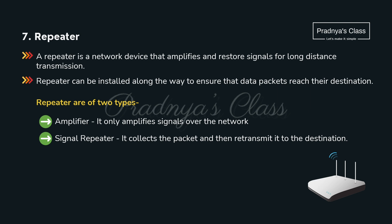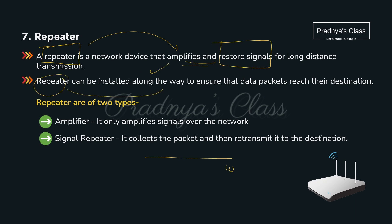The next network device is repeater. Over a long distance the signal will get weakened, so we need repeaters. Repeaters amplify the signals and restore them. For that purpose repeaters are installed along the way.